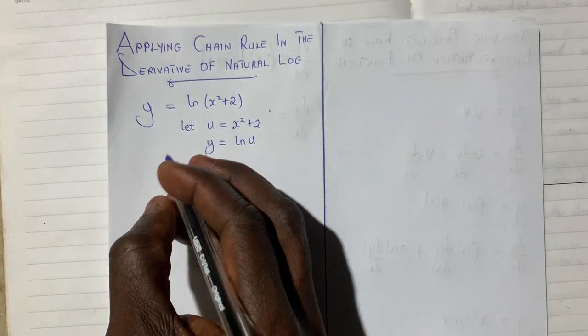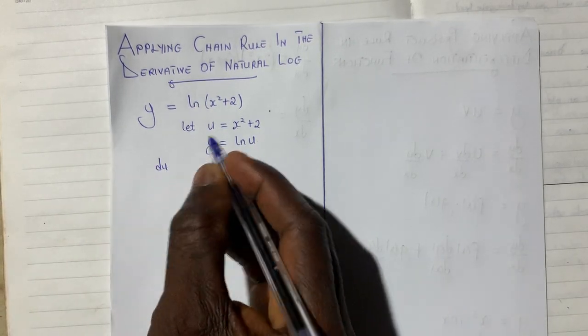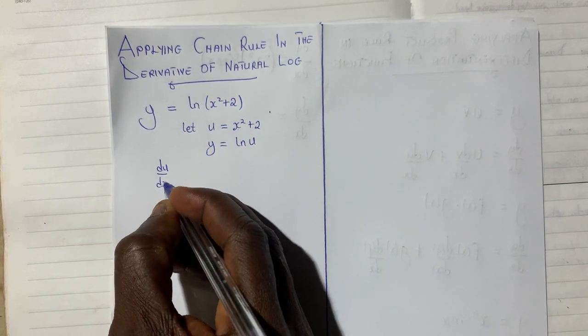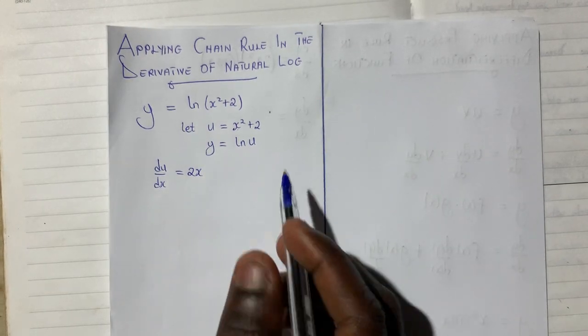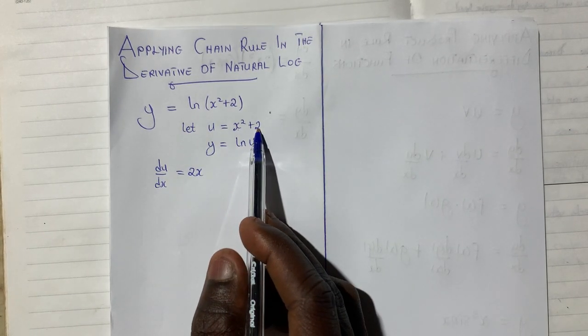Let's differentiate this one. We have du with respect to x will give us du dx giving us 2x. The derivative of a constant is always 0.